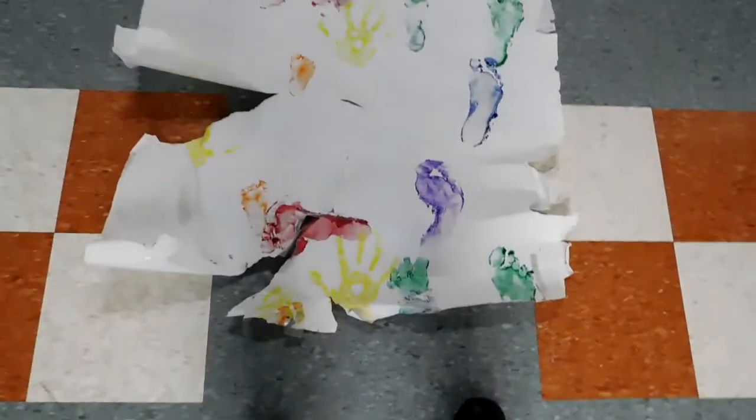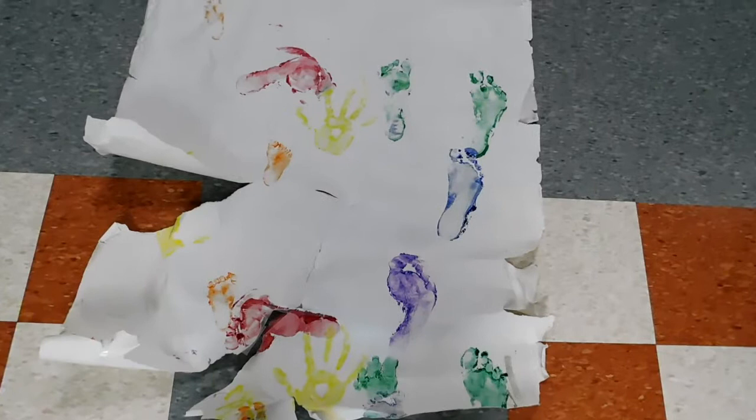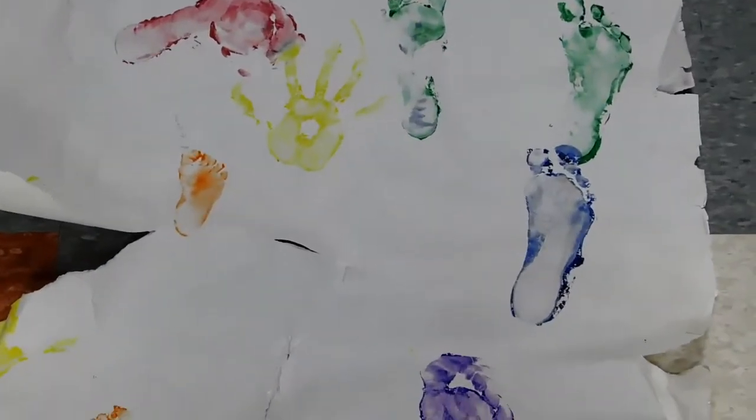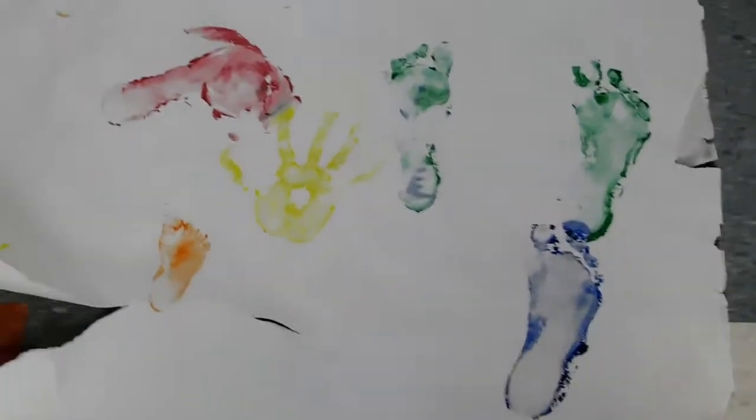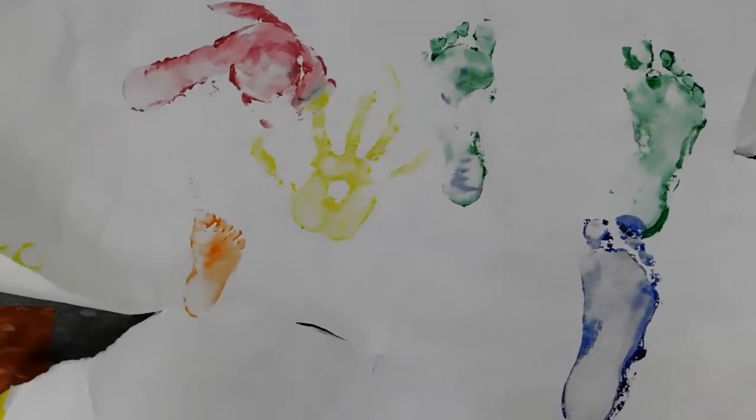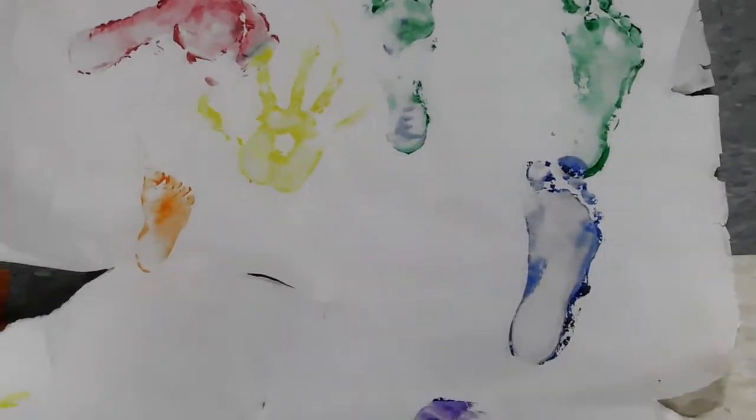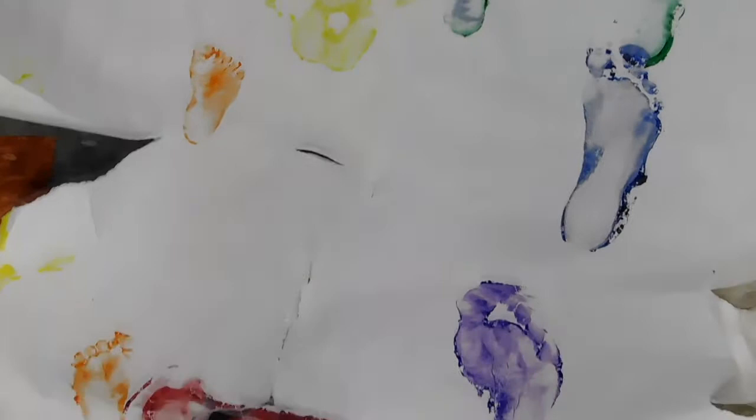Alright, Lab 29 is on fossil footprints and what we're going to do is use this paper that has a bunch of mine and my boys' footprints on it from years ago. Owen was the little baby in orange and then Derek and I did the other colors.